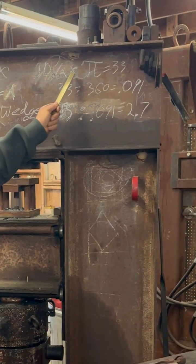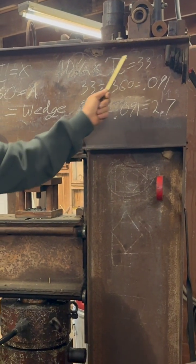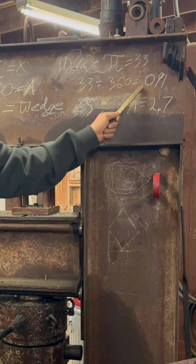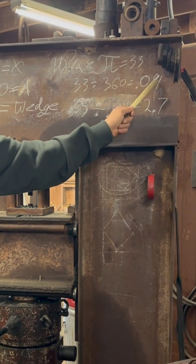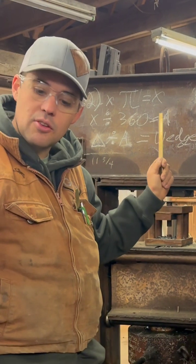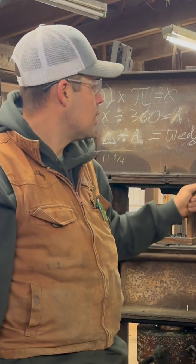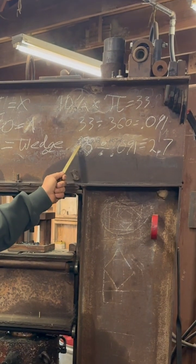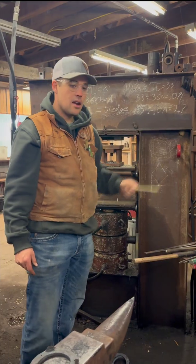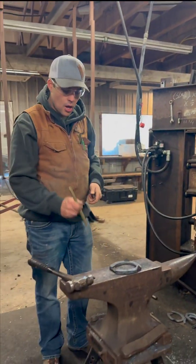So 10.5 times pi equals — rounding up to 33. 33 divided by 360 equals 0.091 — I'm going to remember that number. I take my delta: it's 5/16ths at the toe, 9/16ths at the heel, so there's a quarter inch difference. Quarter inch divided by 0.091 gives me almost three degrees of wedge — 2.7 degrees of wedge with this shoe.